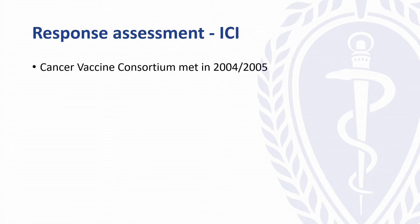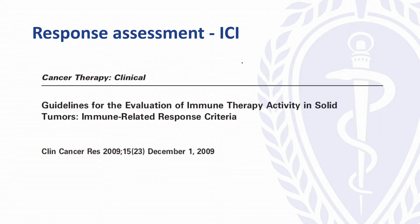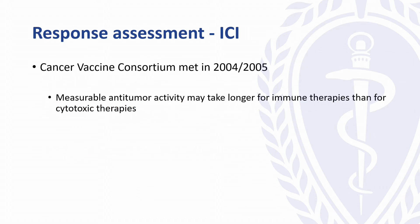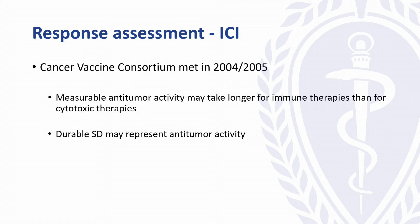Early in experience with checkpoint inhibitors, it became clear that we were seeing some atypical responses to therapy. Based off of a meeting of immunotherapy experts in the mid-2000s, a paper was published about 10 years ago outlining what you could consider the central tenets of response assessment in the context of checkpoint inhibition. First, it can take longer for anti-tumor activity to show up on CT scans than it does for cytotoxic chemotherapies. And secondly, a period of durable stable disease can represent viable and real anti-tumor activity.